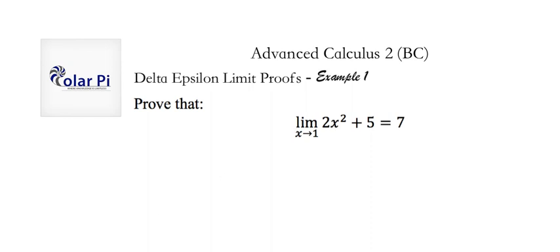Example 1. If you haven't watched Example 0, watch it, because it's the most important example — it really sells the idea of a delta-epsilon limit argument. Here I'll give you a second proof. I say second because I gave a very basic proof in Example 0, but this will be our very first example of a somewhat sophisticated proof using delta-epsilon.